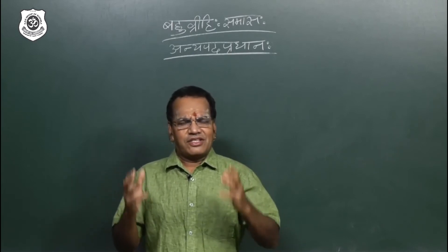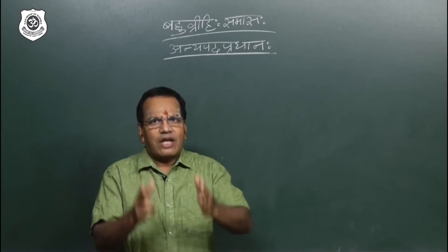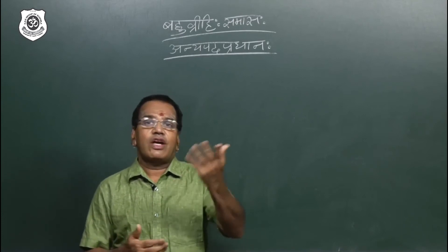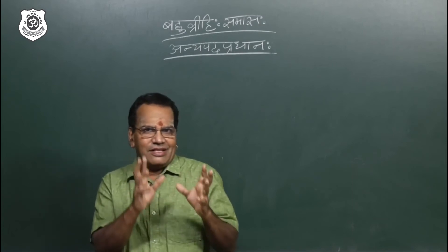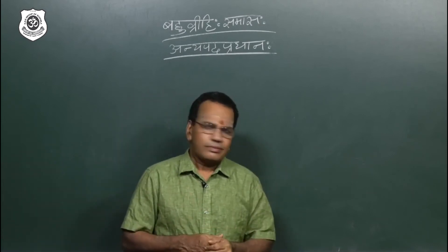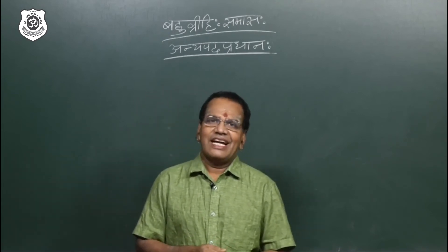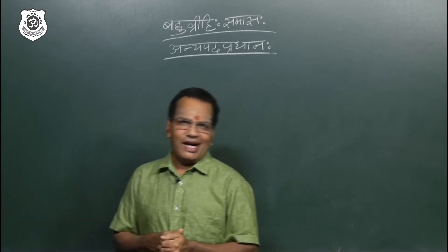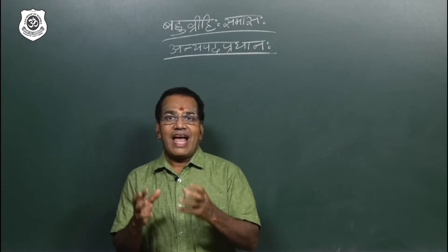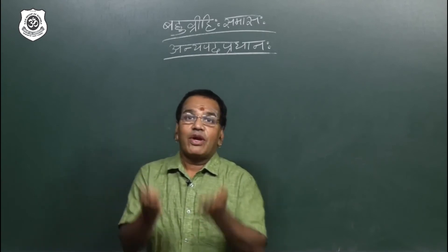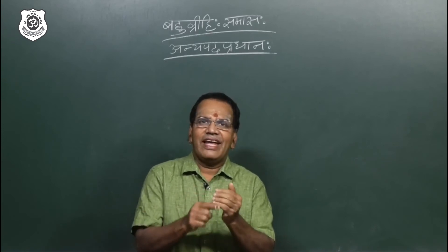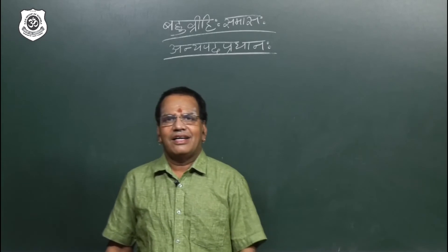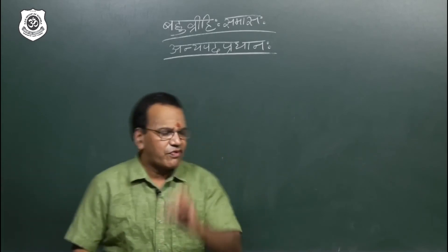Bahuvrihi means: through this word we are going to understand something else. For example, Dasha Anana — we use it as a short form, but we are describing the physical attribute of ten heads. No one would name themselves 'ten heads'; it describes one who has ten heads — Ravanaha. Similarly, Shurpanakha: Ravana's sister is called Shurpanakha, meaning one who has nails like a winnow (moram in Tamil). So first we go to Dasha Anana: Dasha Ananani Yasya Sah = Dashanana.